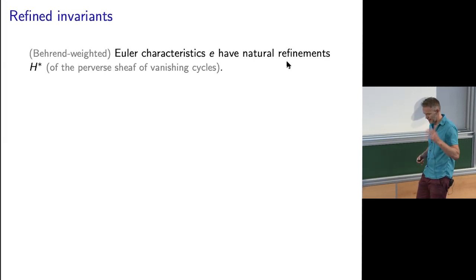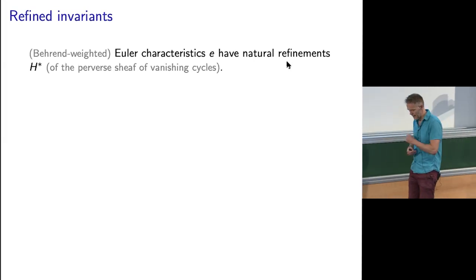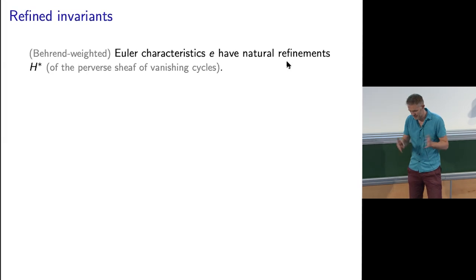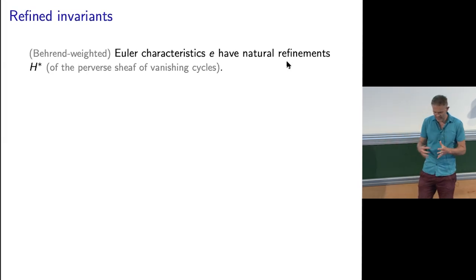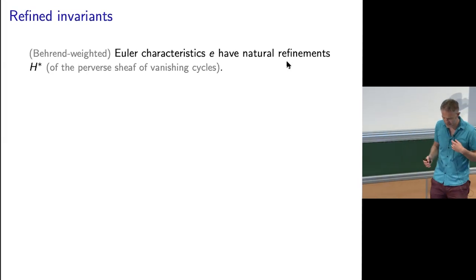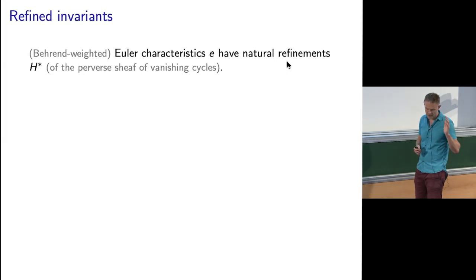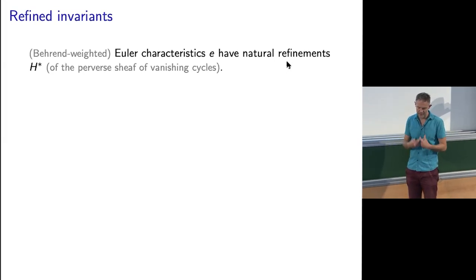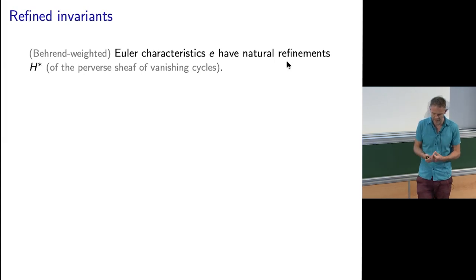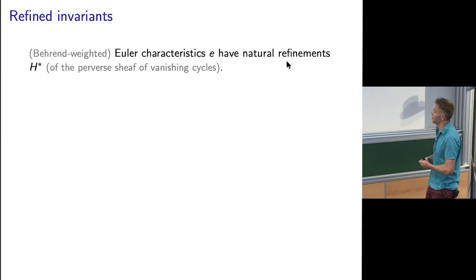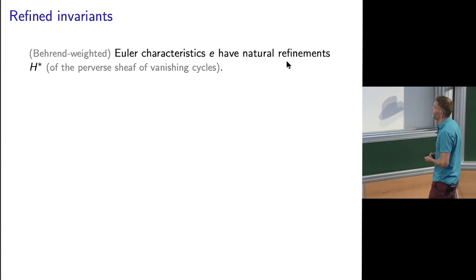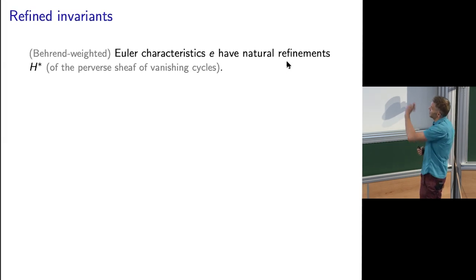One thing physicists were really emphasizing is that there should be a refined version of Vafa-Witten theory predicted by one of their physics theories, which they really don't know how to compute. There's an attempt to find this refined theory. A few people have asked about Behrend-weighted Euler characteristics, which you can do in the compact case — but that's the wrong thing to do in this non-compact case. That's a shame because in the Behrend-weighted case there's an obvious refinement introduced by Joyce, upgrading Euler characteristics to cohomologies — numbers to graded vector spaces.